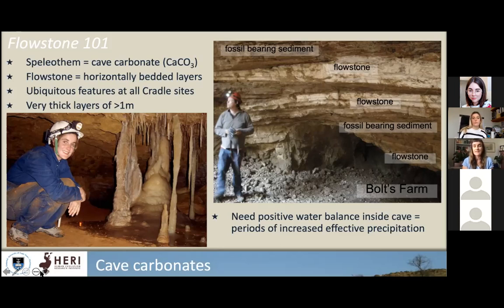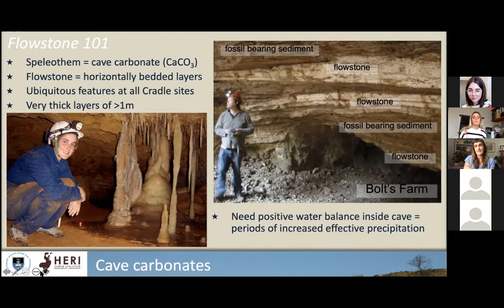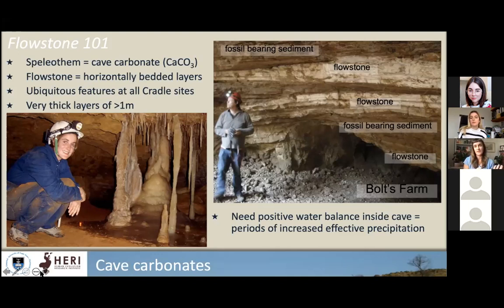Flowstones can be over a meter in thickness. In order to form inside a cave, you need to meet specific conditions — most importantly, a positive water balance inside the cave, which basically equates to increased effective precipitation outside. Flowstones are particularly fussy: if the cave is open, if air is circulating, or if animals are moving in and out, this disrupts their formation crystal by crystal. To form great thick flowstones, not only do you need increased precipitation, but the caves need to be pretty much blocked to everything else.